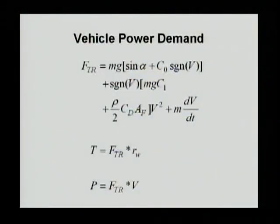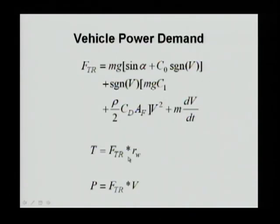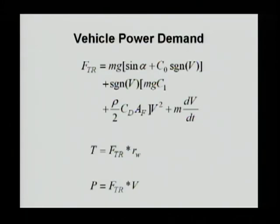The vehicle power demand must satisfy the three resistive forces plus acceleration. Acceleration actually requires the most force of all. The total traction force includes gravitational force, rolling resistance, aerodynamic resistance, and acceleration. From that force, you can calculate the torque needed at the wheel and the power required. This is the net power to drive the vehicle; for actual drivetrain power, you must also account for the efficiency of each component and the transmission.